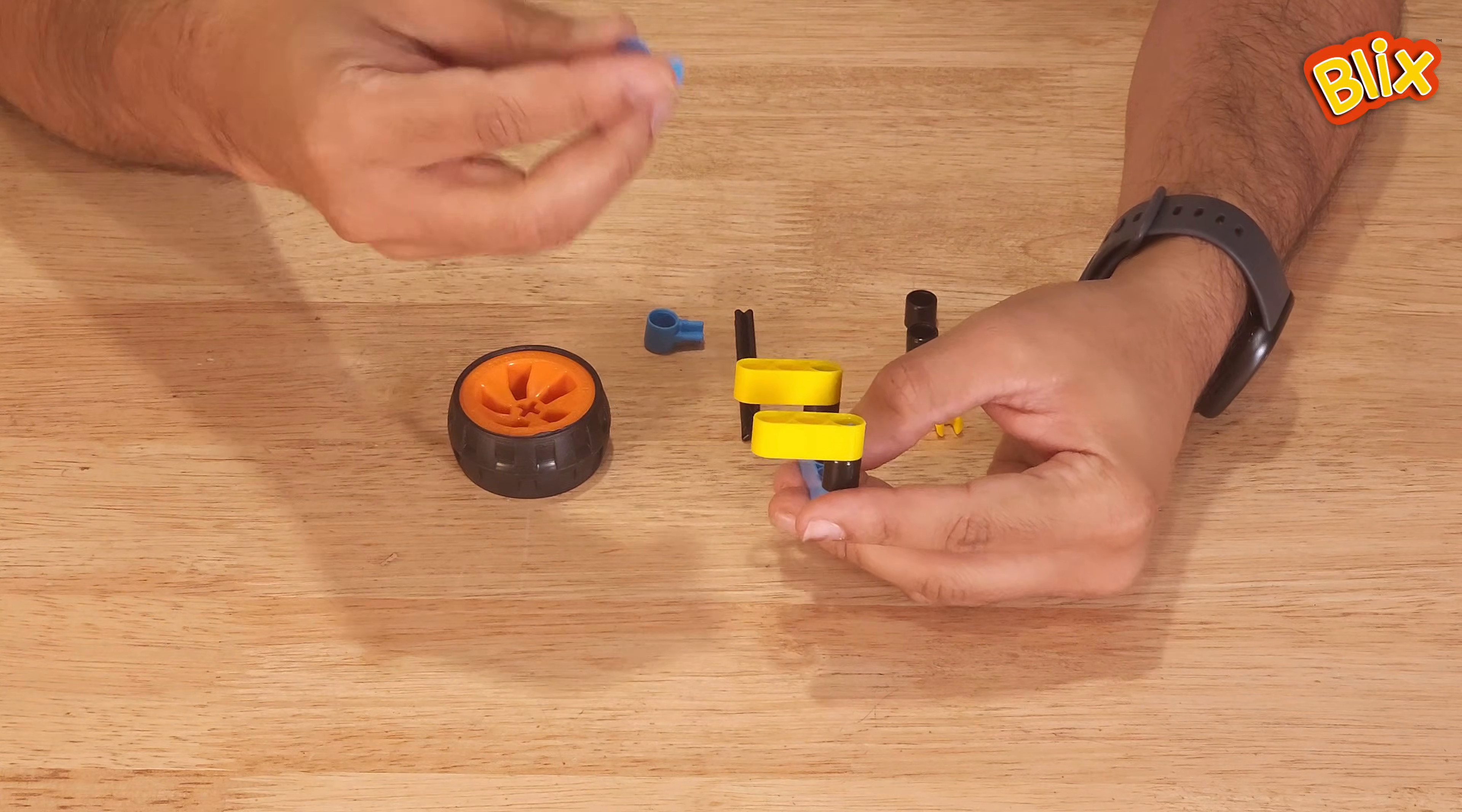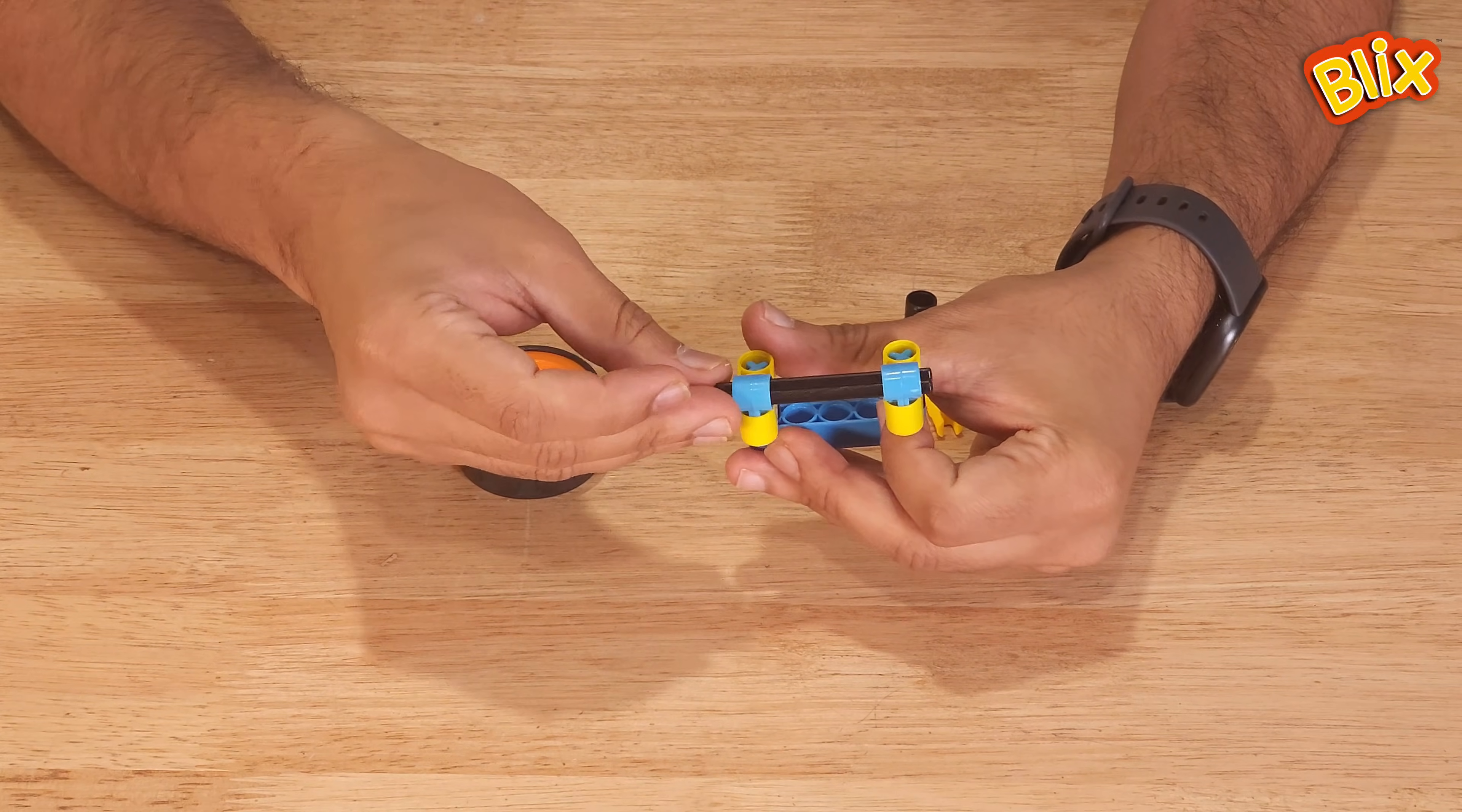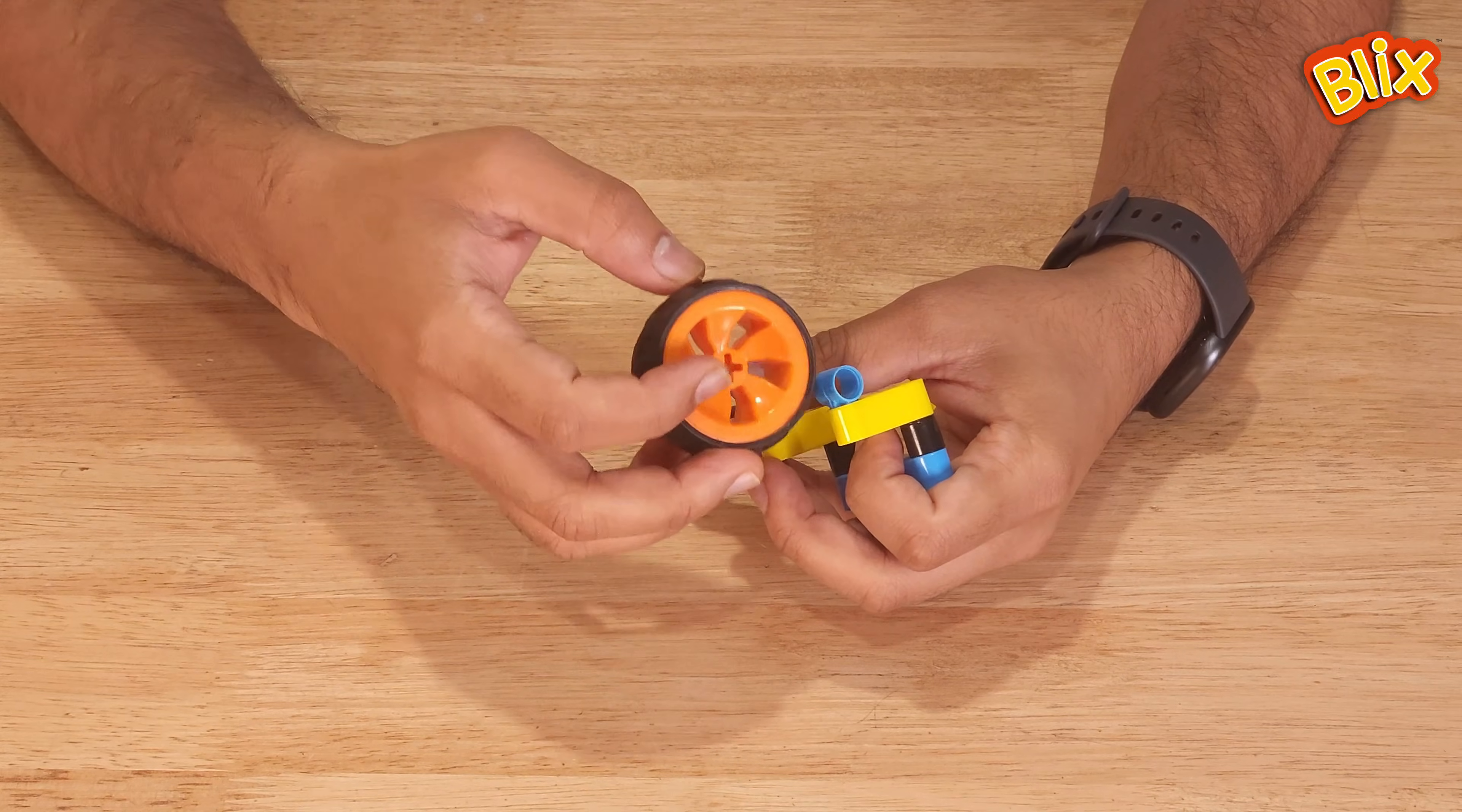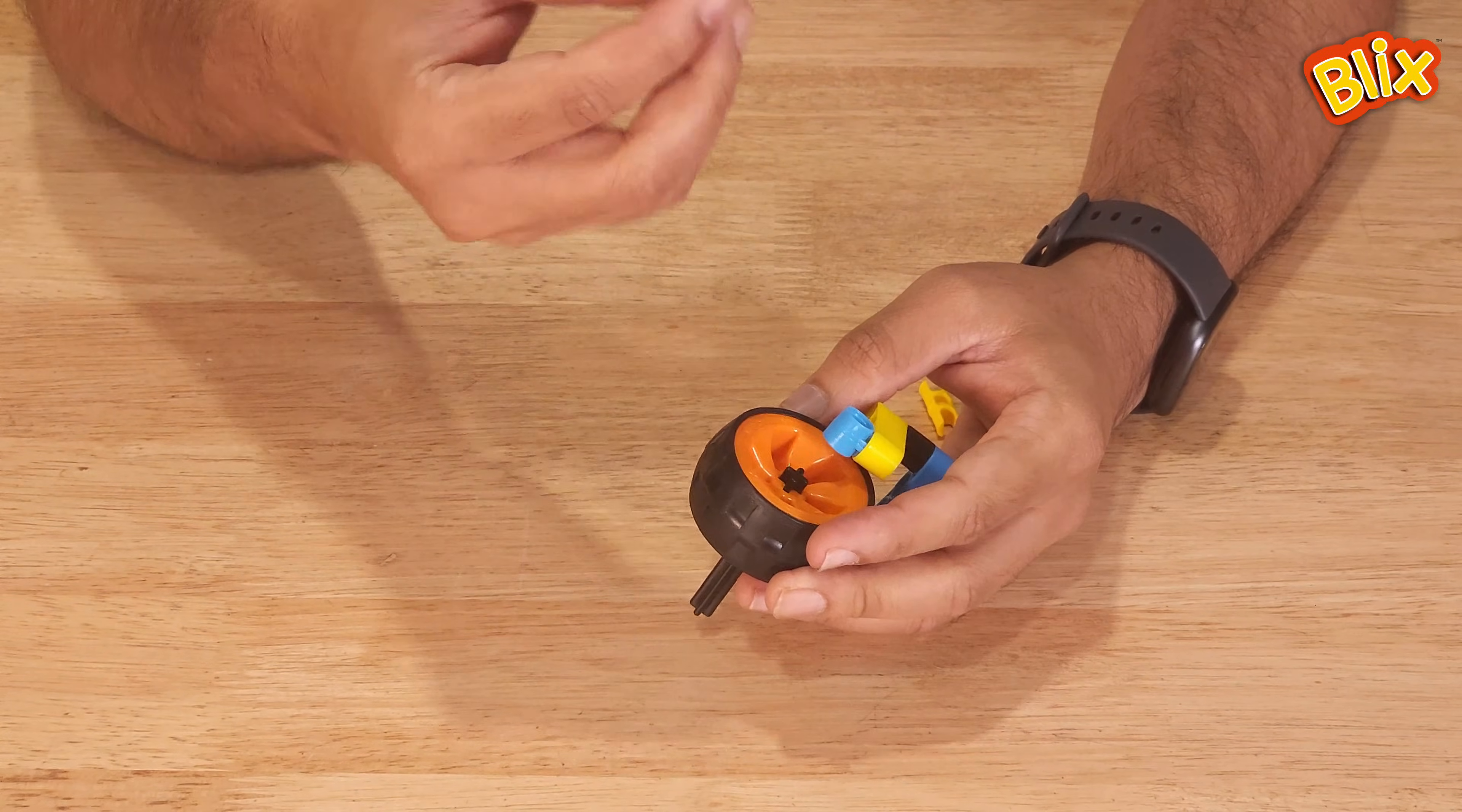After this, use a CH2. Now this is where your shaft can slide in easily. Take a TW1, place a wheel between this. Place another TW1.